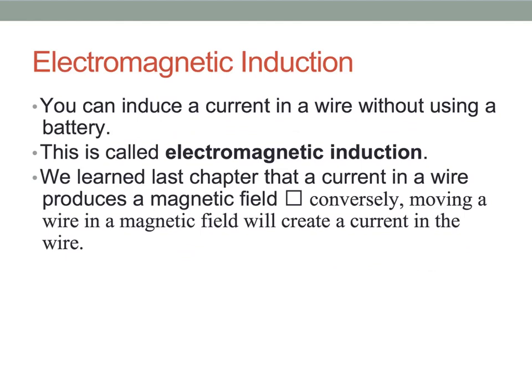So electromagnetic induction. This is an important vocabulary word that you guys should know. What this means is you can induce current in a wire without using a battery. And this process is what electromagnetic induction is. As we learned in last chapter, a current in a wire produces a magnetic field. We can also switch that around. Conversely, moving a wire in a magnetic field will create a current in the wire.